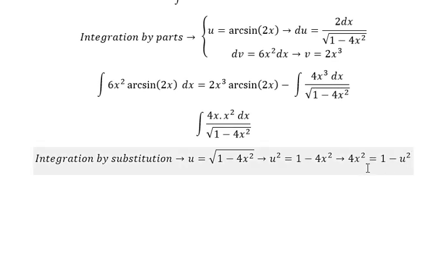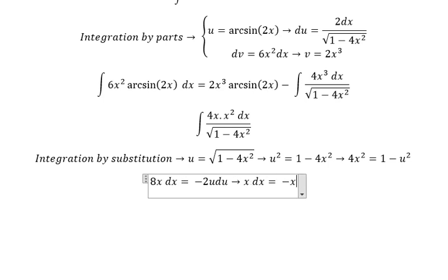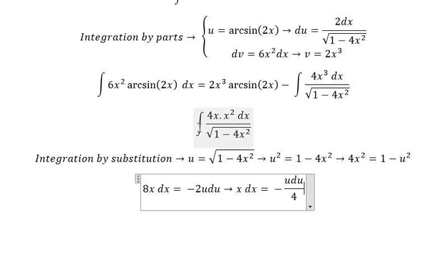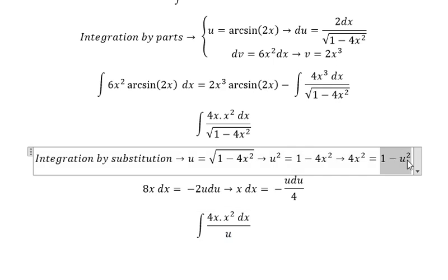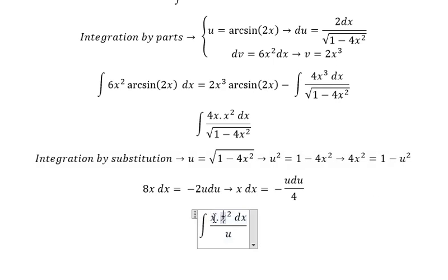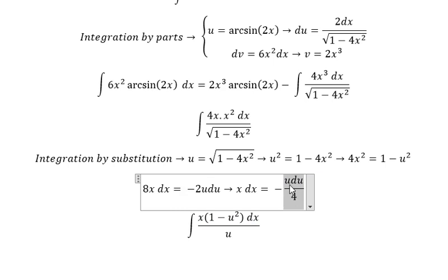Taking the derivative, we get 8x dx equals negative 2u du. Since we don't have 8 in our integral, we divide both sides by 8, giving x dx equals negative u du over 4. Now we change everything: the square root becomes u, x squared becomes 1 minus u squared, and x dx becomes negative u du over 4.